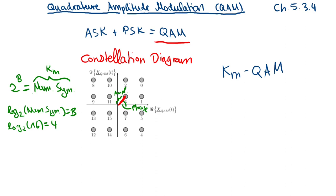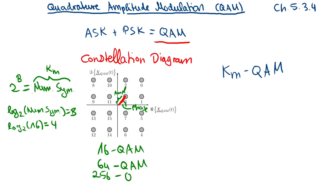In this example we have 16 states, and this is called 16-QAM. QAM is the modulation technique and the number in front describes the number of discrete symbol states in the constellation. Other common values are 64-QAM and even 256-QAM, where one symbol can encode one byte.